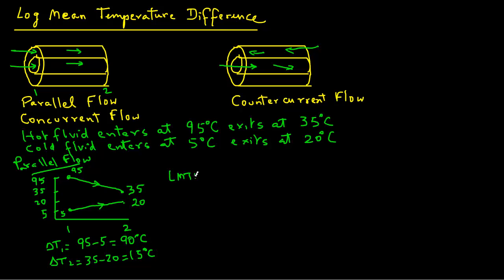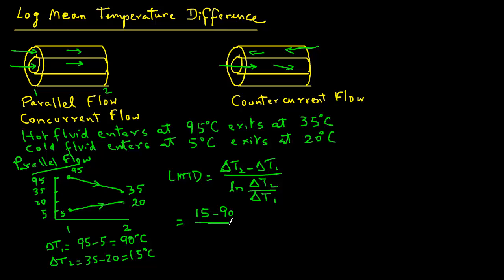From our definition of log mean temperature difference, recall that it is delta T2 minus delta T1, divided by the natural log of delta T2 over delta T1. Note that delta T2 comes first in both the numerator and the ratio. So the LMTD for parallel flow is (15 minus 90) divided by natural log(15/90), which equals 41.86°C.